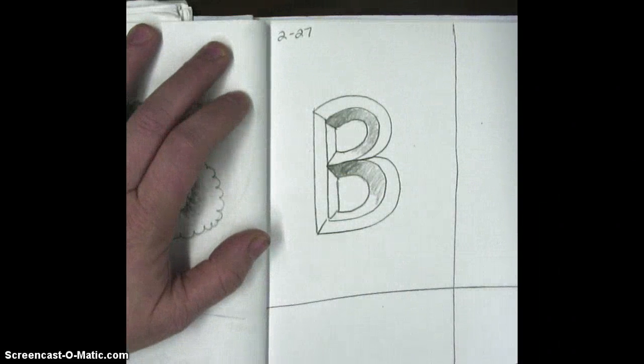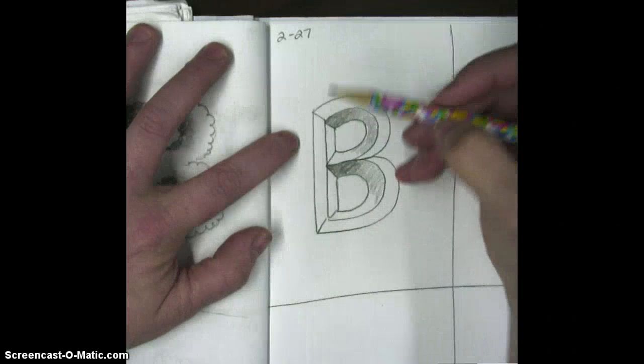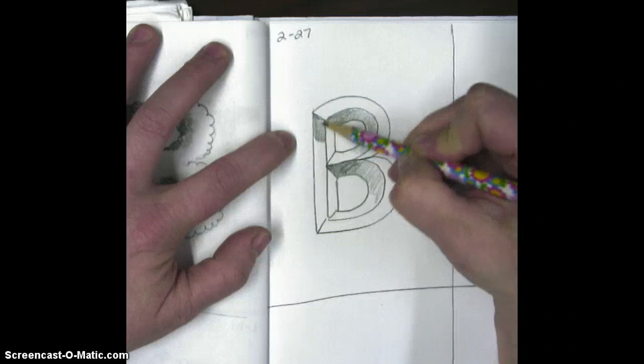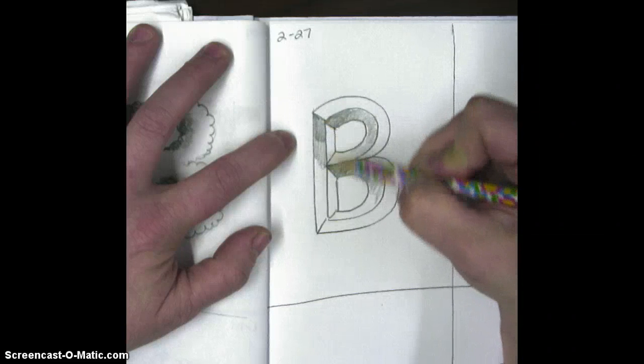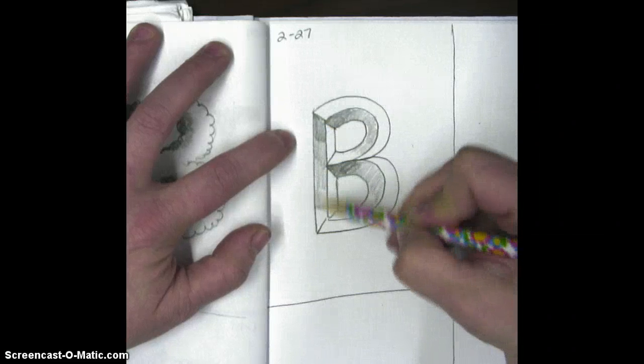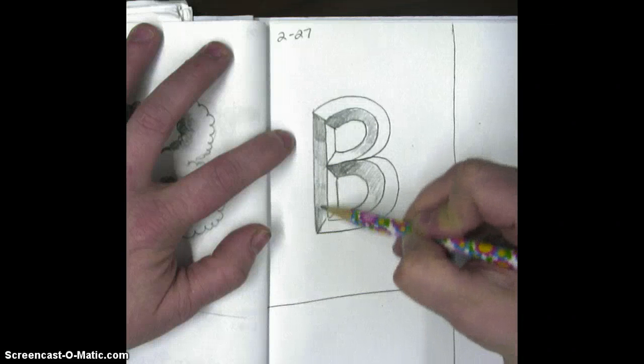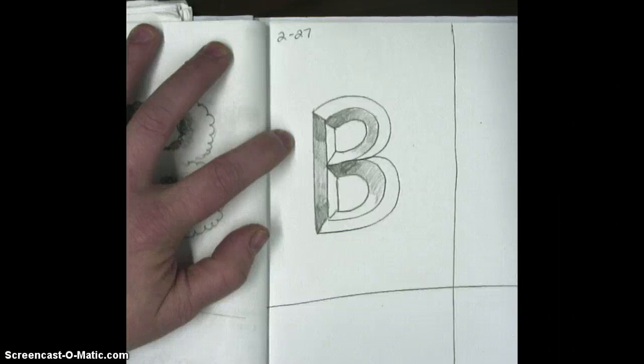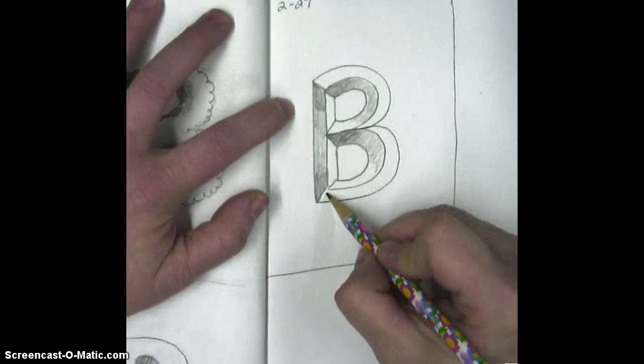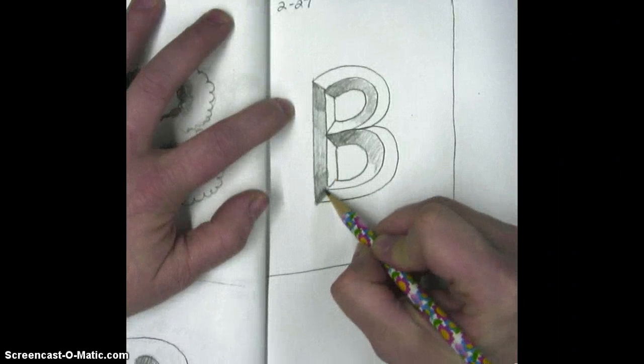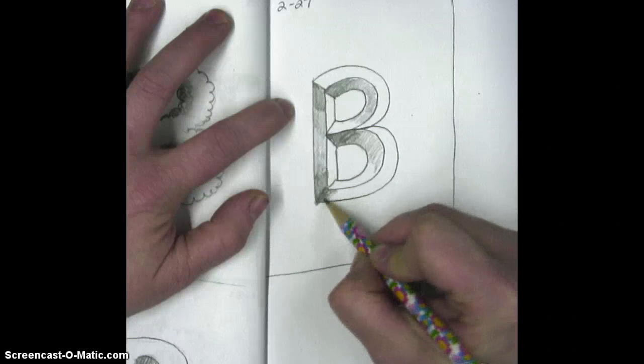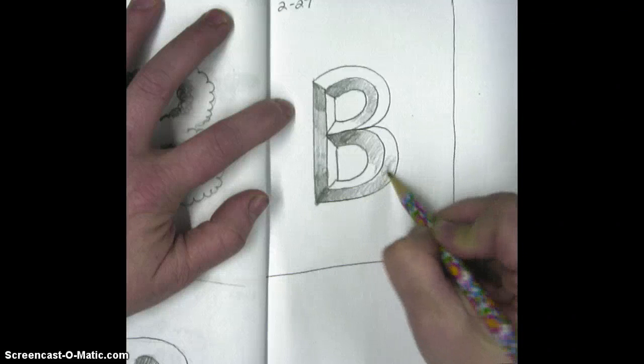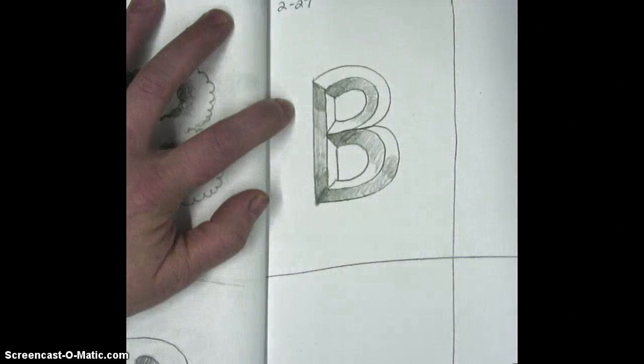We're going to do another shadow down the left side, right here. This one is going to go from dark to medium and light and back to dark again. On the bottom, very bottom, we're going to go dark inside here and lighten it as we move up the B.